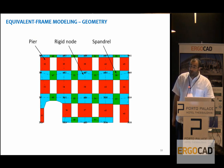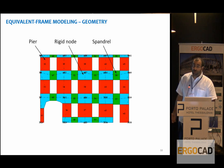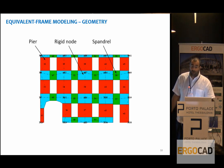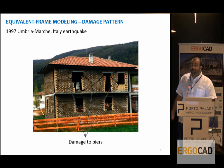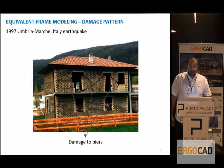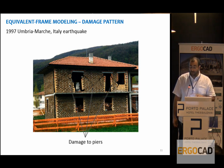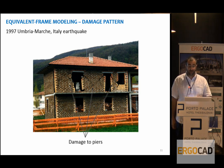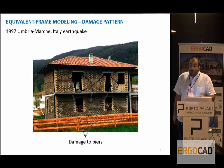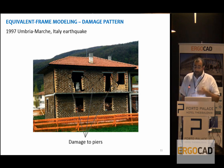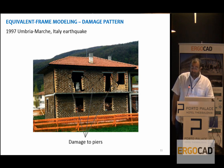There is not only a geometrical justification. If we look at damage due to earthquakes in real buildings, we can see that it tends to concentrate into these elements — piers and spandrels. For example, in the case of the 1997 earthquake in Italy in the central regions of Umbria and Marche, we can see that mainly the piers were damaged in this building.